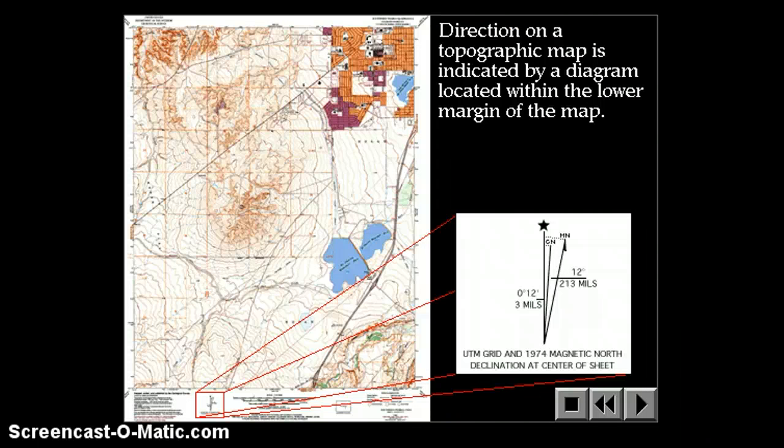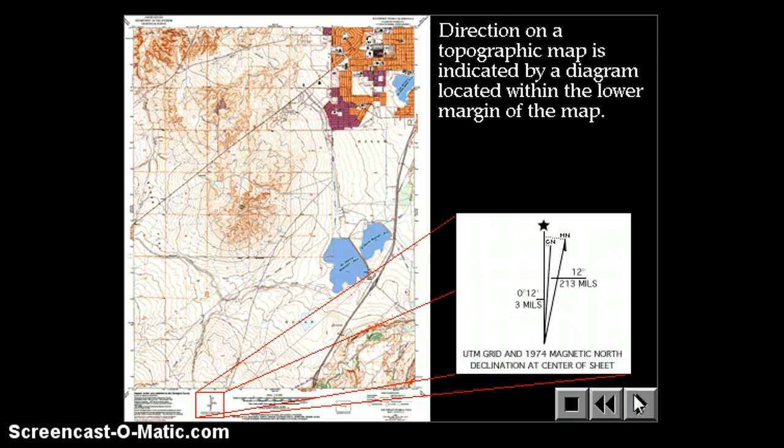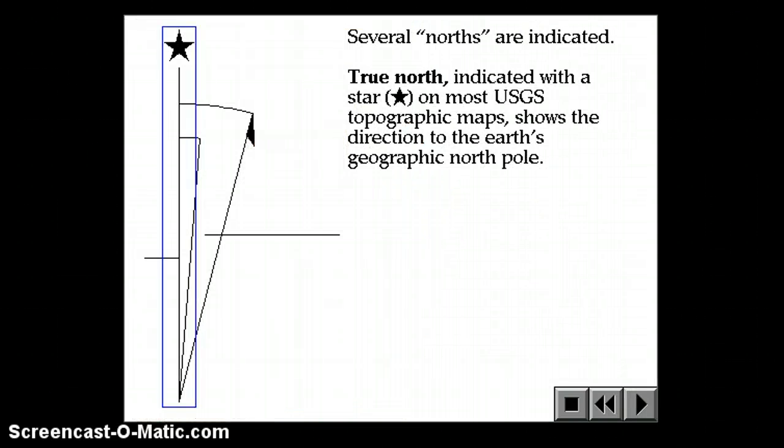Also on the bottom part of the map, lower left center, you can find a direction arrow showing you magnetic north and true north. The magnetic north is given by a pointed arrow. The true north is given by a star.